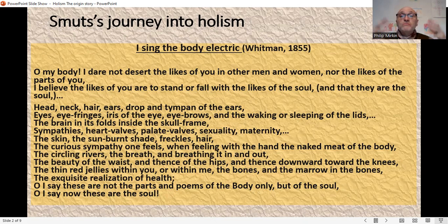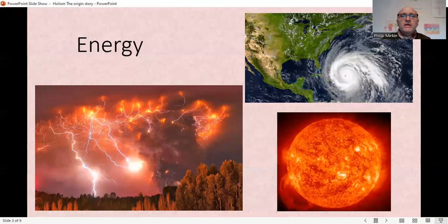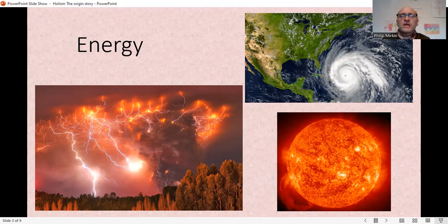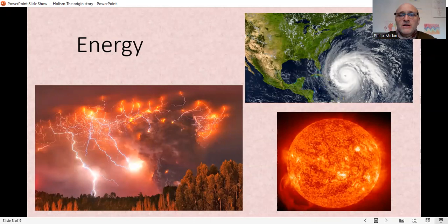Smuts didn't stop there. He thought about all of evolution and how this human personality came about. He started with energy and matter—with the Big Bang theory, which we now have but Smuts didn't, we know that energy and matter occurred at the Big Bang and went through a process of evolution and transformation.